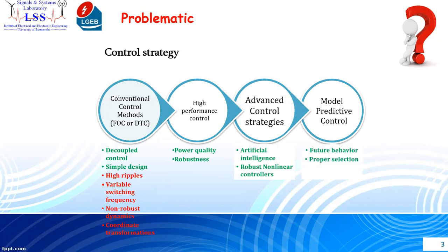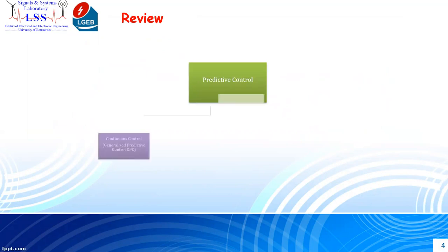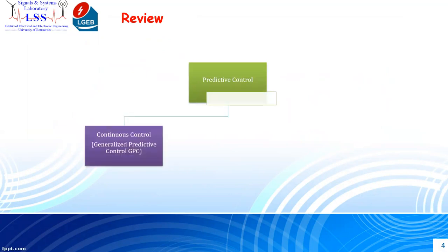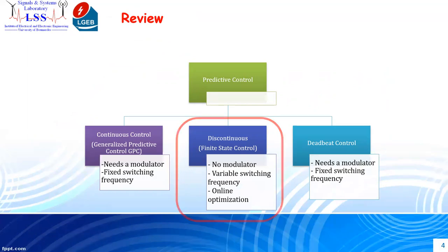Model predictive control has the ability to predict the future behavior of the control system and then select the proper control action. Generally, model predictive control is divided into three categories: the continuous or generalized model predictive control (GPC); the discontinuous or finite control set model predictive control; and the deadbeat model predictive control. Today, we are going to focus on the finite control set model predictive control.